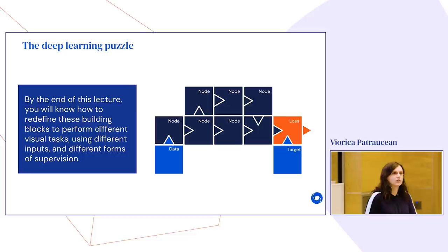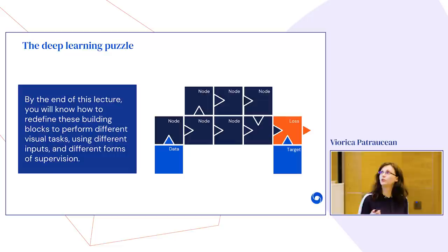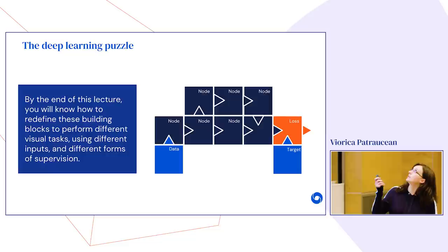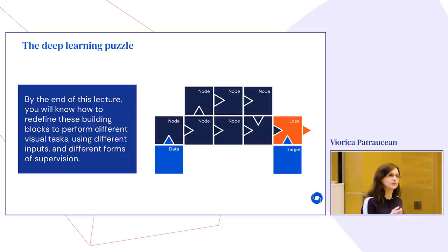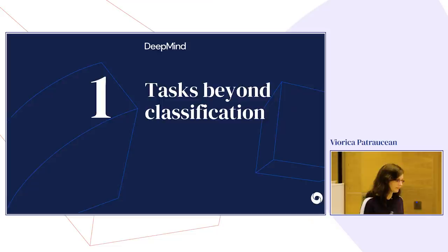In previous lectures, my colleagues introduced deep learning as a very flexible framework where we have computational nodes that learn a mapping between input and output nodes, guided by a loss function node that trains the system to make predictions as close as possible to the desired target. By the end of this lecture, you will know how to redefine these building blocks to perform different visual tasks using different types of inputs and different forms of supervision.